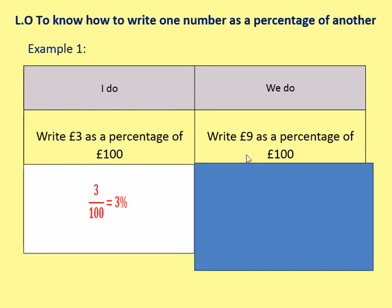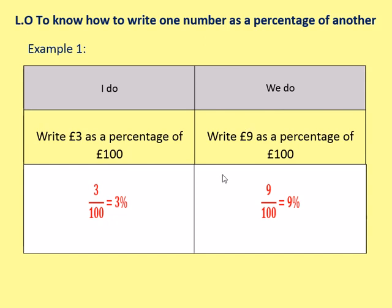So please pause the video there, copy that down, try the we do. Nine pound as a percentage of one hundred pound. And again, quite simply for the we do, we have 9 pounds as a percentage of 100 pounds. So nine out of one hundred, which gives me 9%.